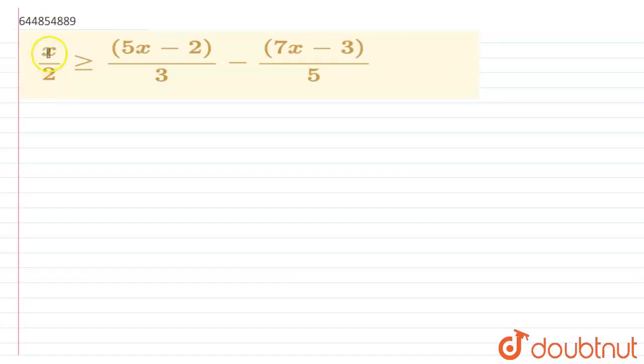Hello my dear students. The given question is the inequality x/2 which is greater than or equal to 5x minus 2 upon 3 minus 7x minus 3 upon 5.